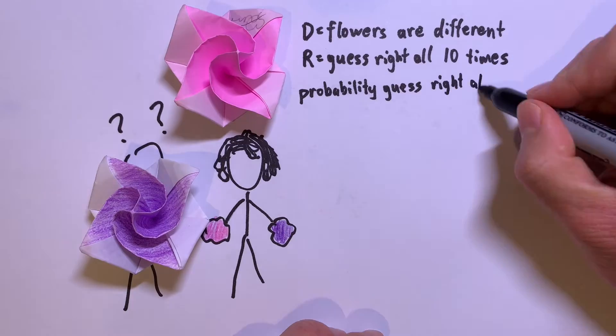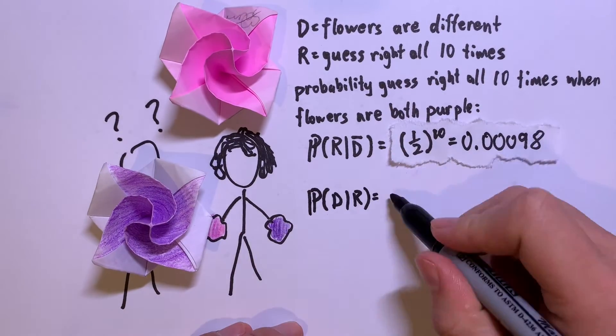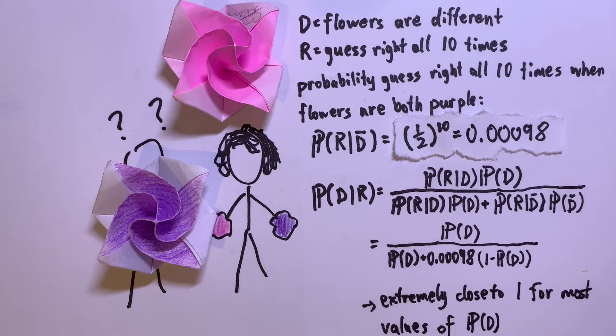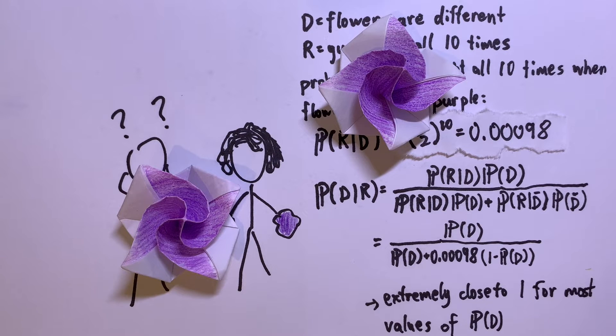If Anakin does this ten times and you get it right every time, you can be 99.9% certain that the flowers are actually different. However, he still has no idea which flower is the magic one, so you can rest assured that he won't risk stealing any of them for himself.